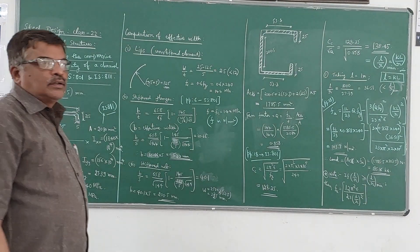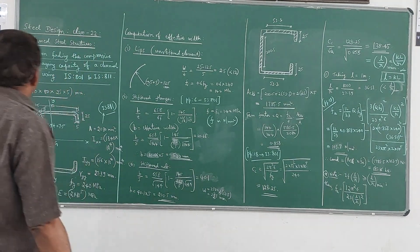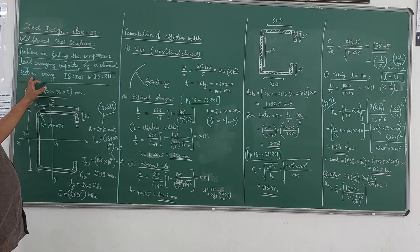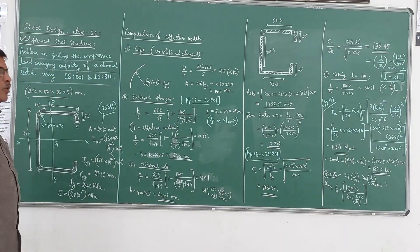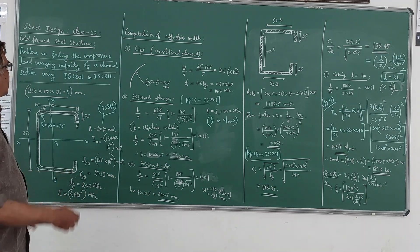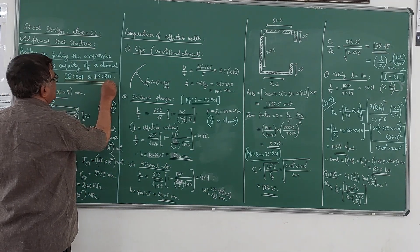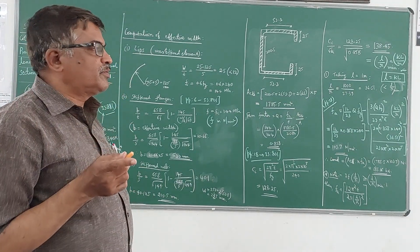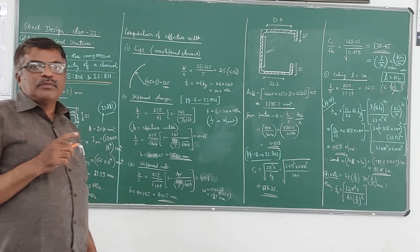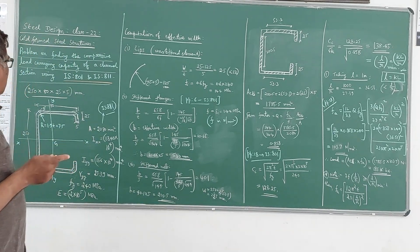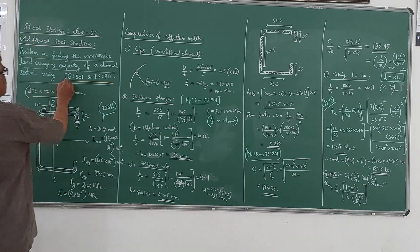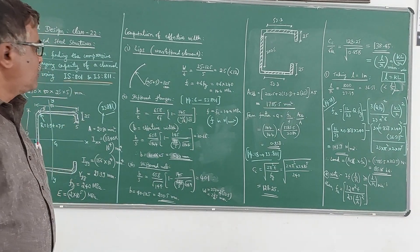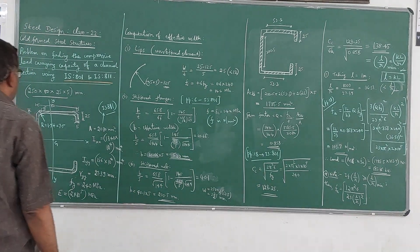In this class, we will discuss a problem on finding the compressive load carrying capacity of a channel section used in a cold formed steel structure, using Indian codes IS801 and IS809. I have previously explained the usage of the British code. Now, let us take a problem of finding the compressive load carrying capacity for a channel section using the Indian code.